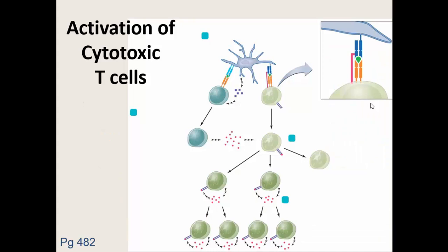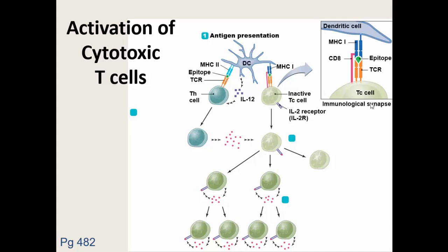To activate cytotoxic T cells and differentiate so we end up with helper T cells, it's a four-step process. First, we have to get presented with an antigen — whether it's MHC1 on all nucleated cells or MHC2 on antigen-presenting cells. This is a dendritic cell, which is an antigen-presenting cell, so it has that MHC2. We're going to be presented with an antigen: is it MHC1, is it MHC2, or is it both? If it has MHC2, this is what's going to trigger our CD4 cells and we'll start to have T helper cells differentiate.